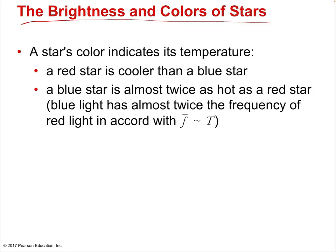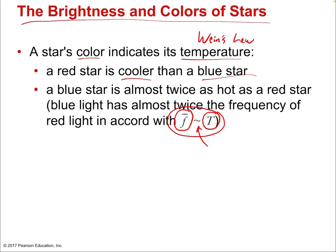What can we measure directly from a star — just a dot in the sky? We can measure its color, and color is directly related to temperature. This is known as Wien's Law, which tells us that a dense body like a star has a direct correlation between surface temperature and color. A red star is cooler; blue stars are hotter. Higher energy blue light means a hotter star — a blue star is almost twice as hot as a red star.